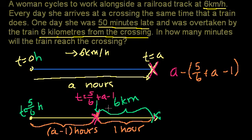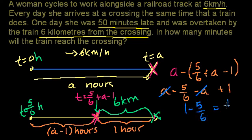Minus 5/6 plus a minus 1. That's the difference in time for the train, in hours. So this is a minus 5/6 minus a plus 1. Luckily the a's cancel out. You're left with 1 minus 5/6 hours, which equals 1/6 hours.